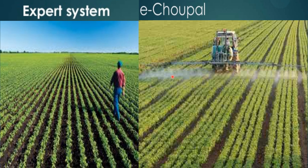e-Choupal: ITC's agri-business division, one of India's largest exporters of agricultural commodities, has conceived e-Choupal as a more efficient supply chain aimed at delivering value to its customers around the world on a sustainable basis. The e-Choupal model has been specifically designed to tackle the challenges posed by the unique features of Indian agriculture, characterized by fragmented farms, weak infrastructure, and involvement of numerous intermediaries.